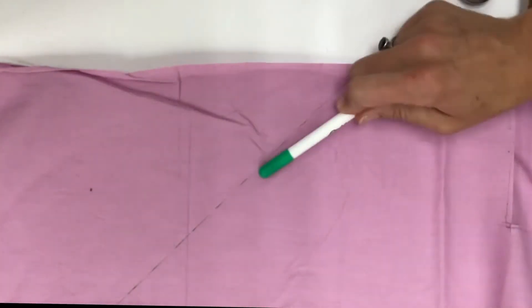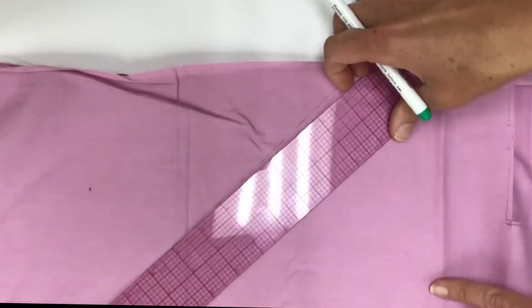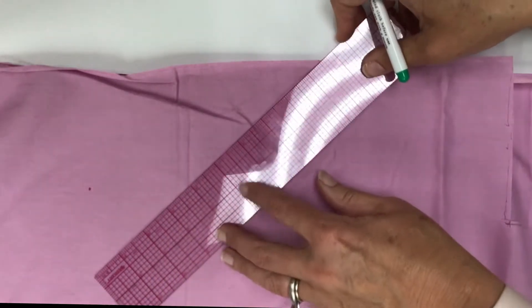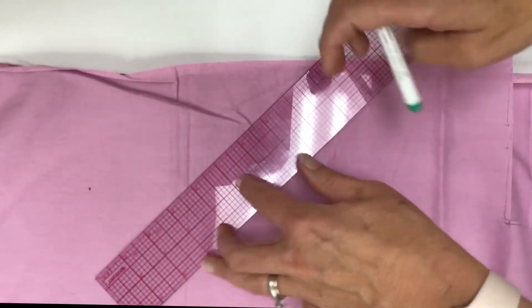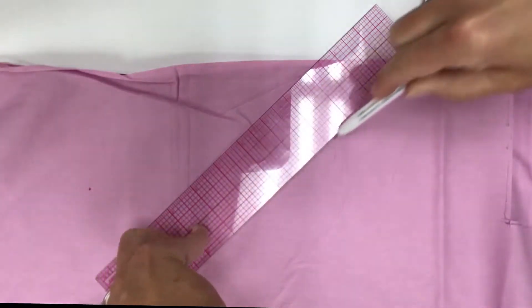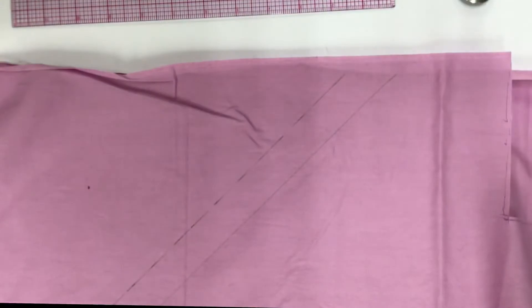Now that I have my angle marked at least once I need to draw one inch wide bias tape. This ruler happens to be two inches so if I just center it and I love that it's clear so I can see the line that I drew earlier and then I can just use the edge. I can go ahead and cut all of this out.